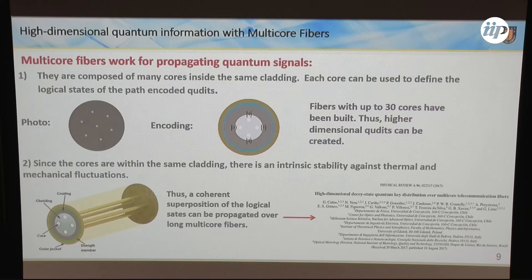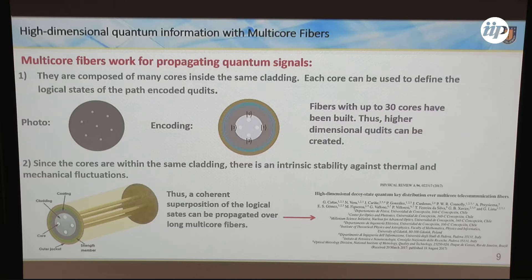We are already doing research with these fibers, and we have shown that they can be used to define and propagate path-qudit states. The basic idea is very simple: you use the cores to define the logical state of the qudits. You can have fibers with up to 30 cores, so you can work with really high-dimensional quantum systems. And what is interesting is that all the cores are inside the same cladding, so the stability is intrinsic to the fiber — if you have a thermal or mechanical fluctuation, it acts globally, and so you can propagate coherent superpositions of logical states over the fiber.